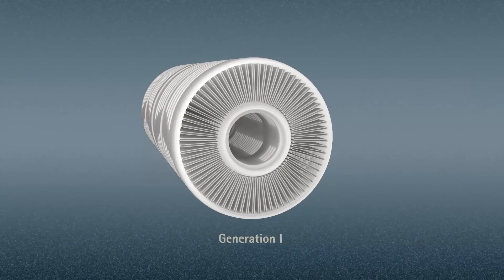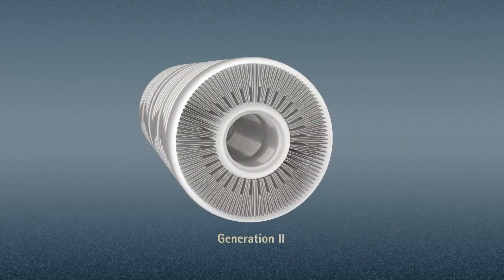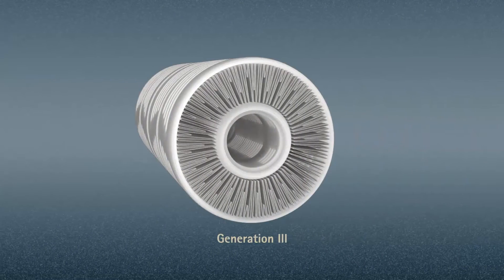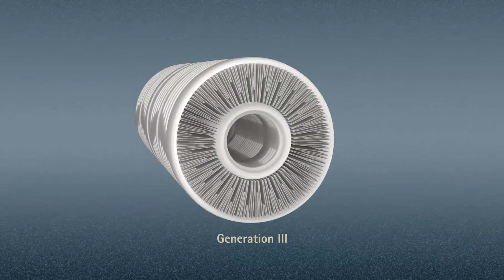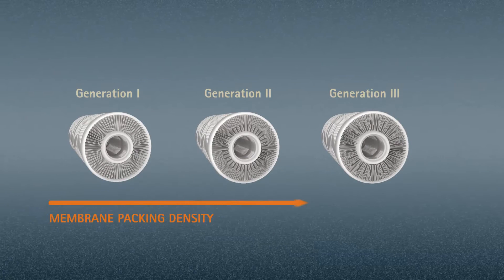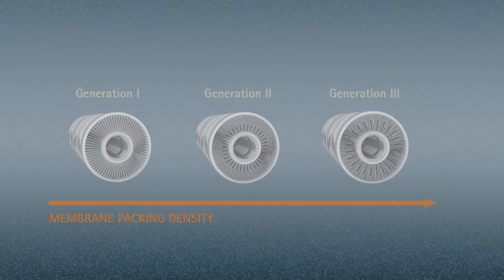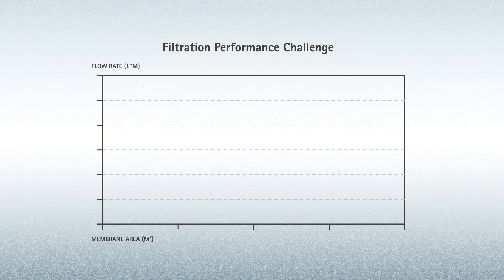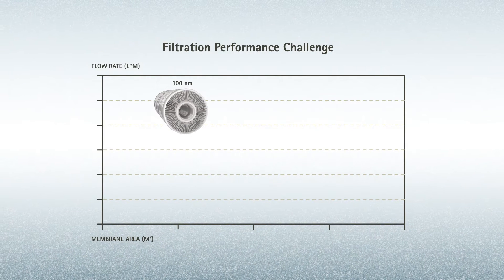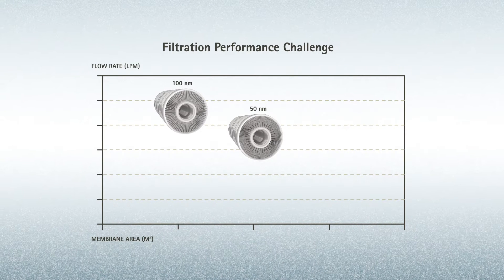Several generations of filters have compensated for the declining flow rate of more advanced membranes by increasing the membrane packing density in each design to add more surface area. Until now, each pleating innovation has enabled Integris to exceed the minimum flow rate required by process tools and enable enhanced yields with improved contamination control.